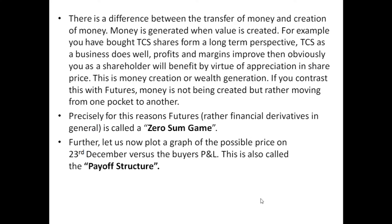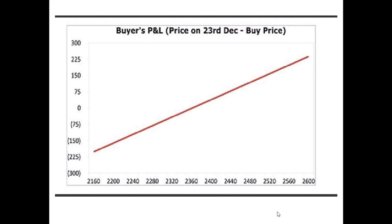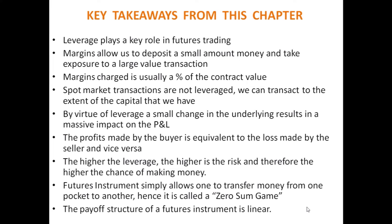Now let us look at the graph of possible prices on 23rd December versus the buyer's profit and loss — this is also called the payoff structure. On the screen you can see the buyer profit and loss plotted against the price on 23rd December. The buyer price starts from 2160 with a loss of around rupees 202. As the price reaches 2600, the profit is around rupees 225 positive. The inclining line on the chart shows the buyer's profit or loss — it is a linear payoff structure.